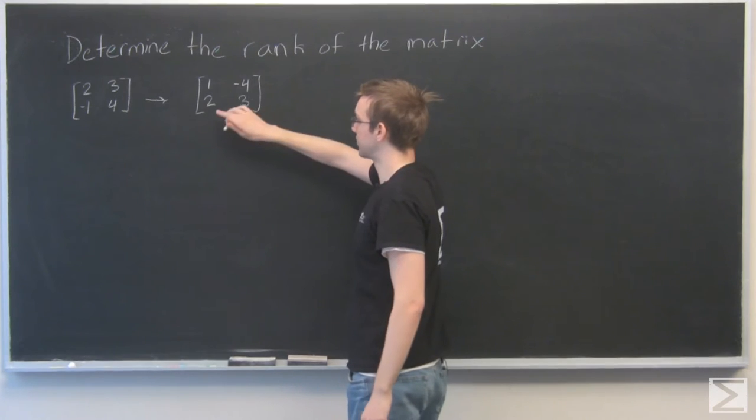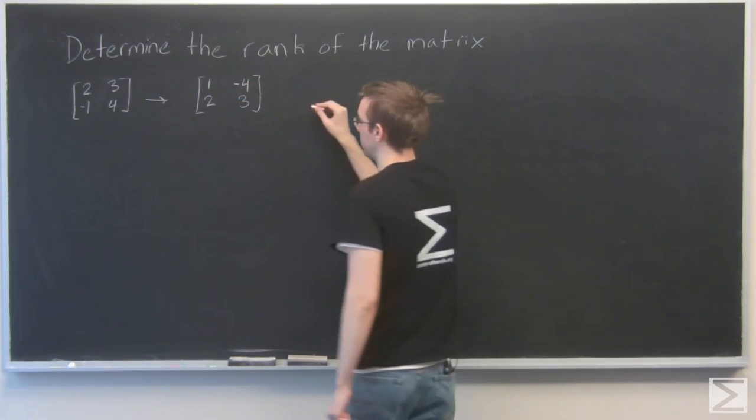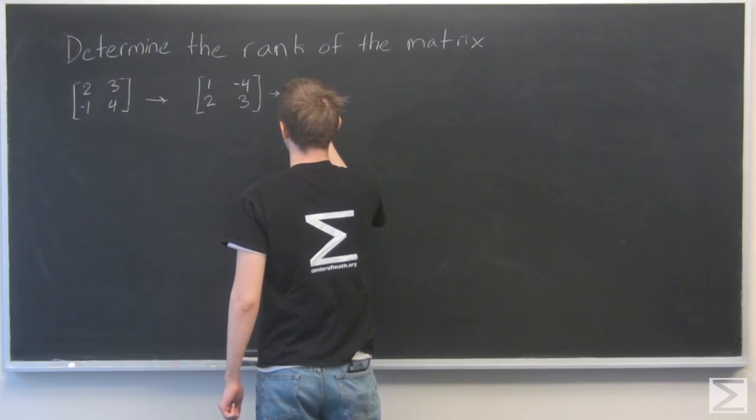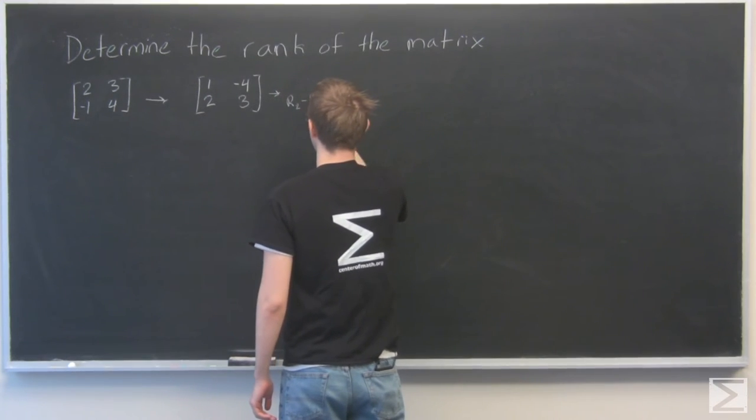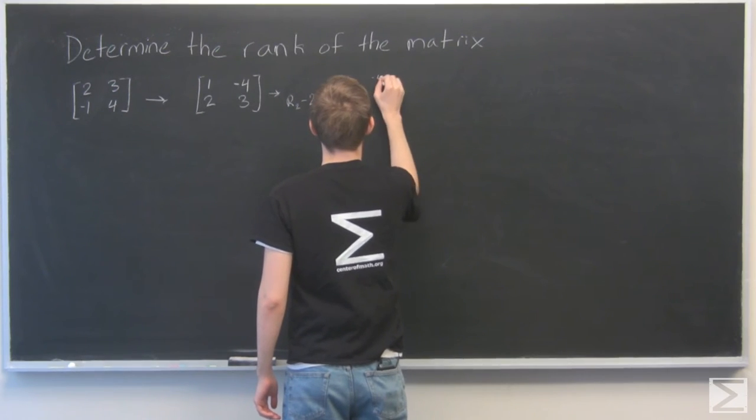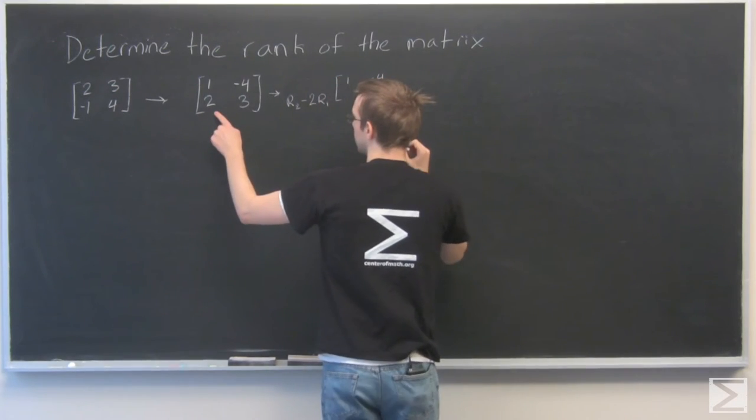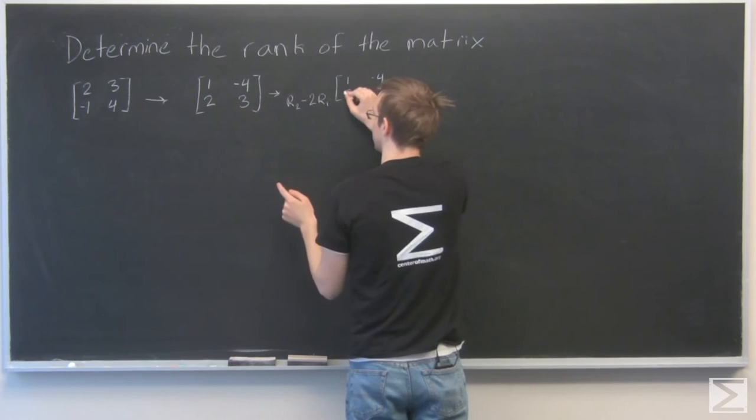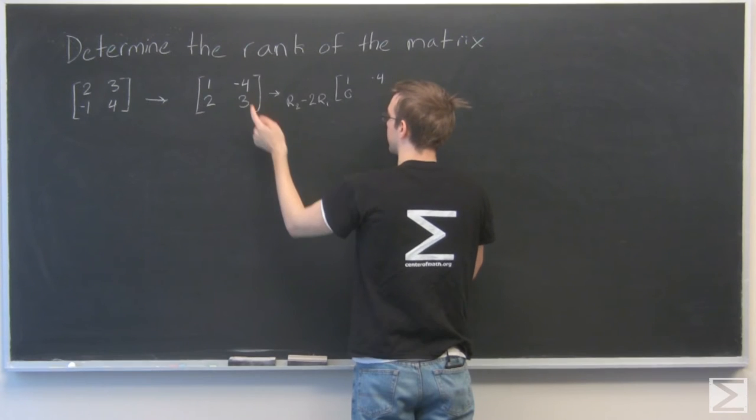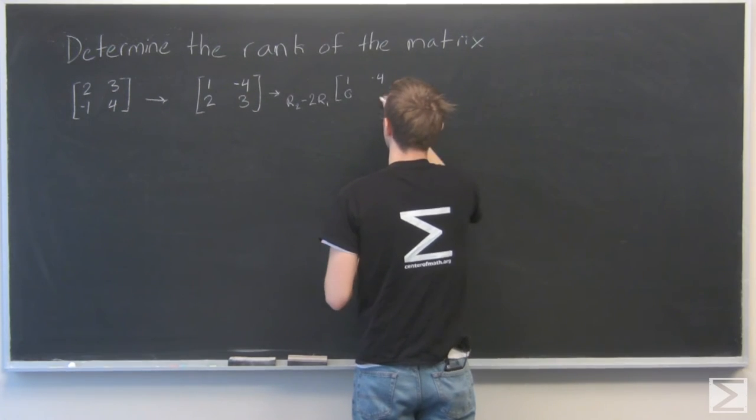Now I'm going to subtract 2 times the first row from the second row. Taking row 2 minus 2 times row 1. So 2 minus 1 minus 1 is 0. 3 minus negative 4 is 7. Again, minus negative 4. 7 plus 4 is 11.